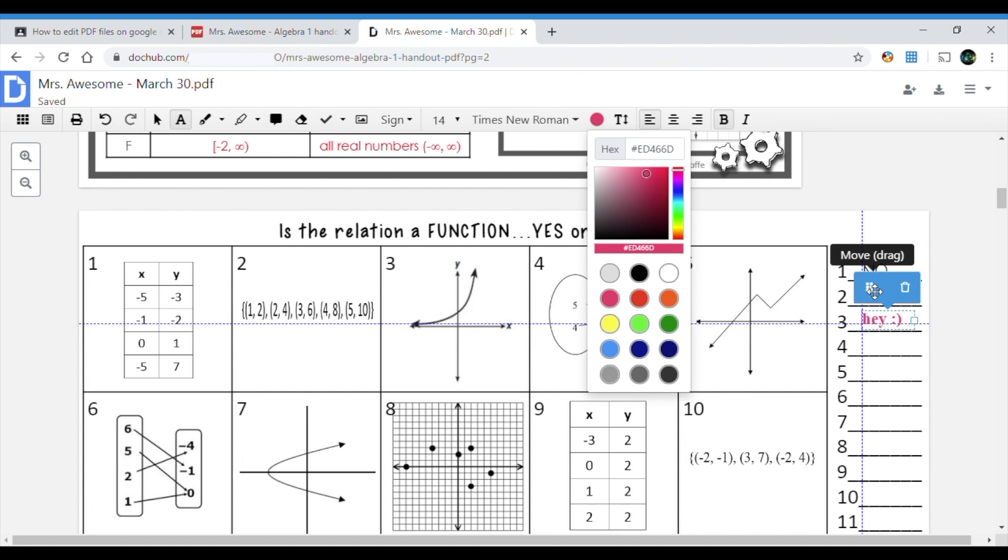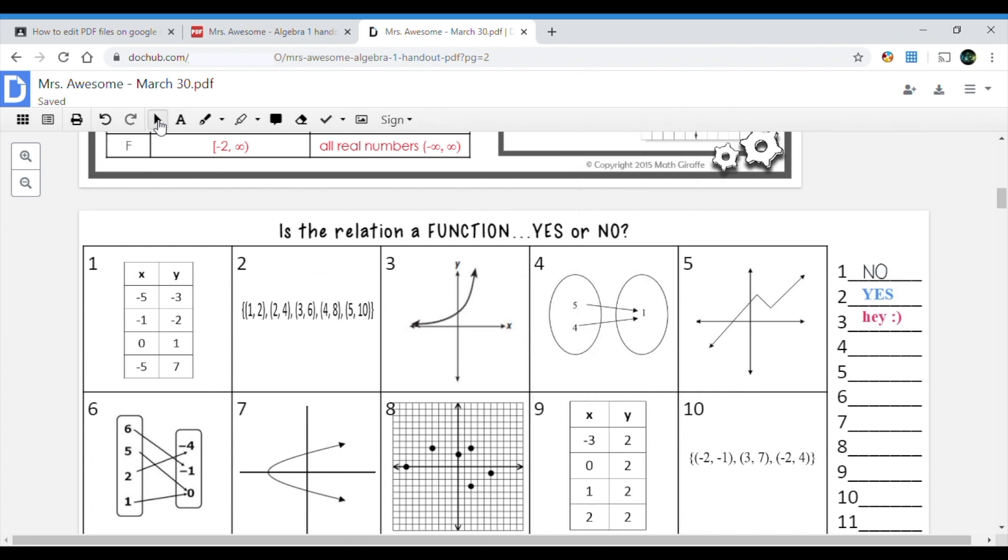But again you can always edit that and change it to whatever color you want. And then of course you can move it with this. If for whatever reason you do not end up seeing these blue box, just click on the pointer, go to where you want to edit, and notice how you're gonna have like orange lines up here. Click on it and you have it again.